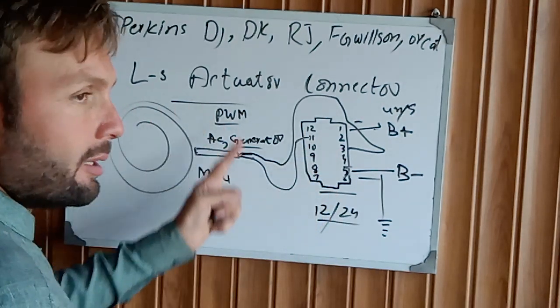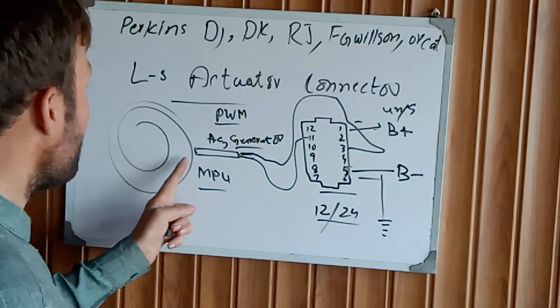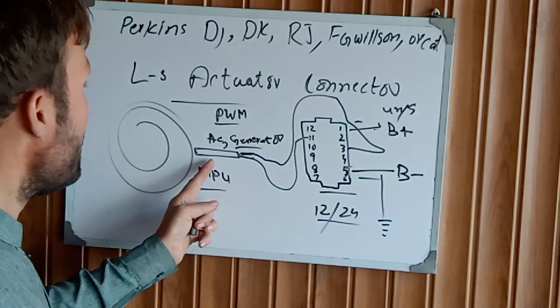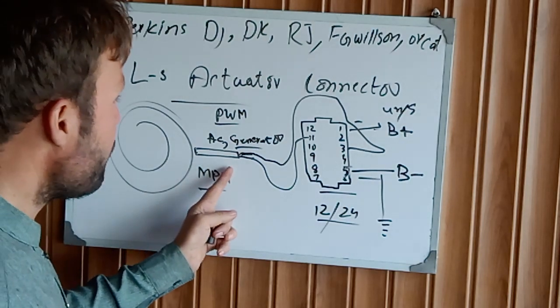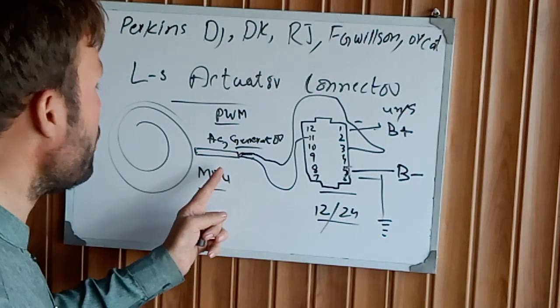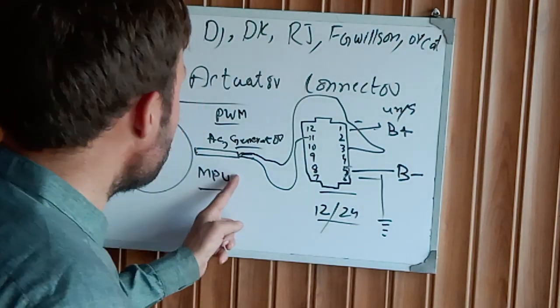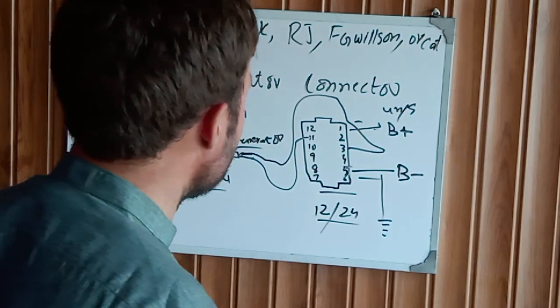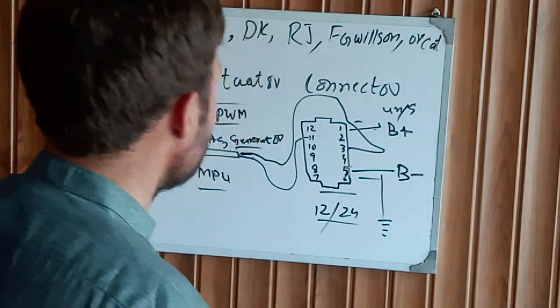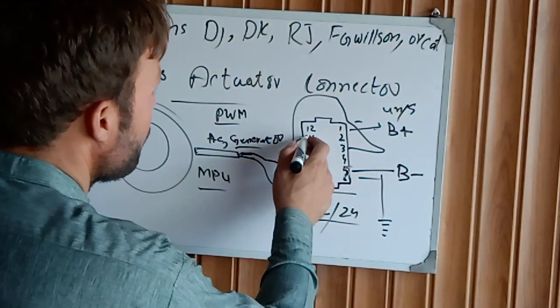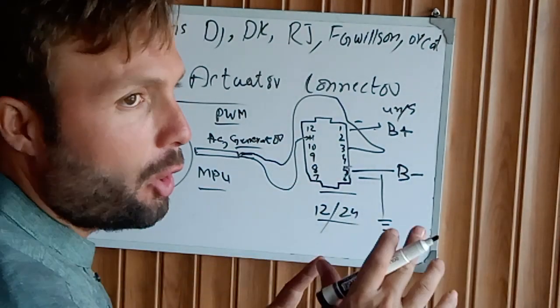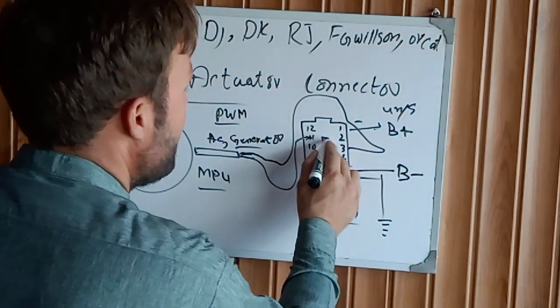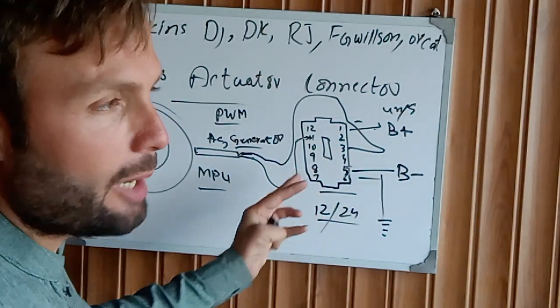Then the engine cranks. The MPU also generates a small amount of AC voltage - like 7 to 8 volts during cranking position - and sends it to the actuator. The actuator operates now.